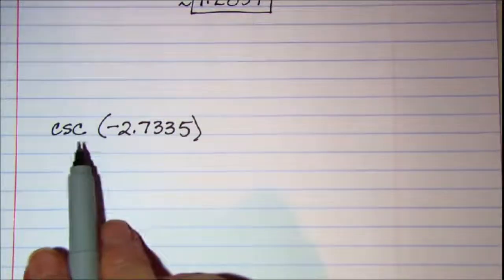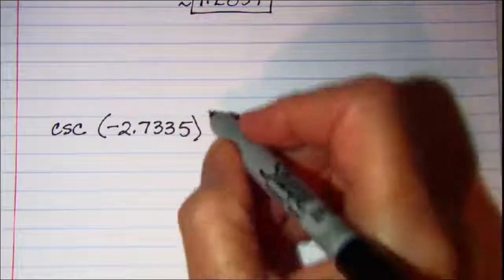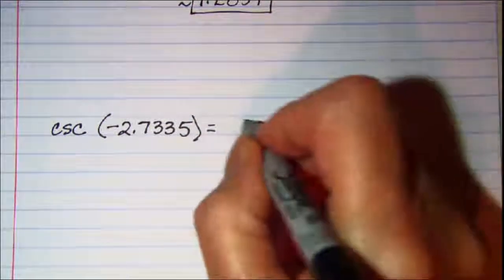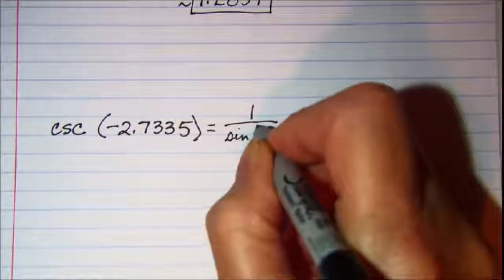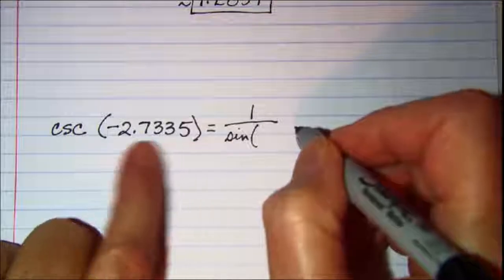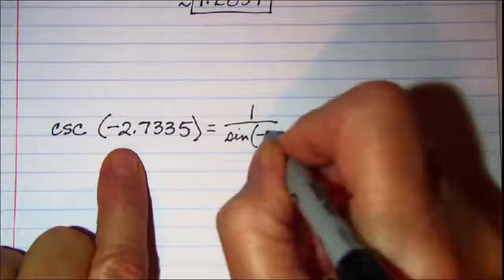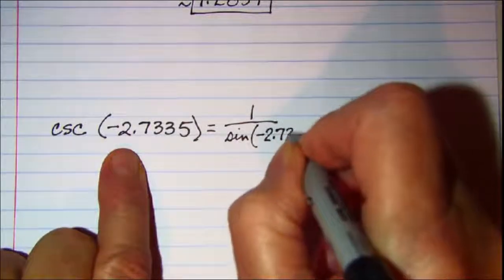So on this one again this is a reciprocal of sine. So I need to rewrite this as 1 divided by the sine of this angle and it's in radians. So negative 2.7335.